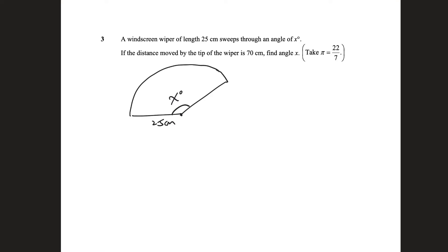And they tell me that the distance moved by the tip, so this is the tip, right, the distance moved by the tip is 70cm. So what do you see? This wiper is drawing out a sector of a circle. It's drawing out the arc, and the whole area becomes a sector of a circle. And so this arc length is therefore 70cm, this whole length is 70cm.